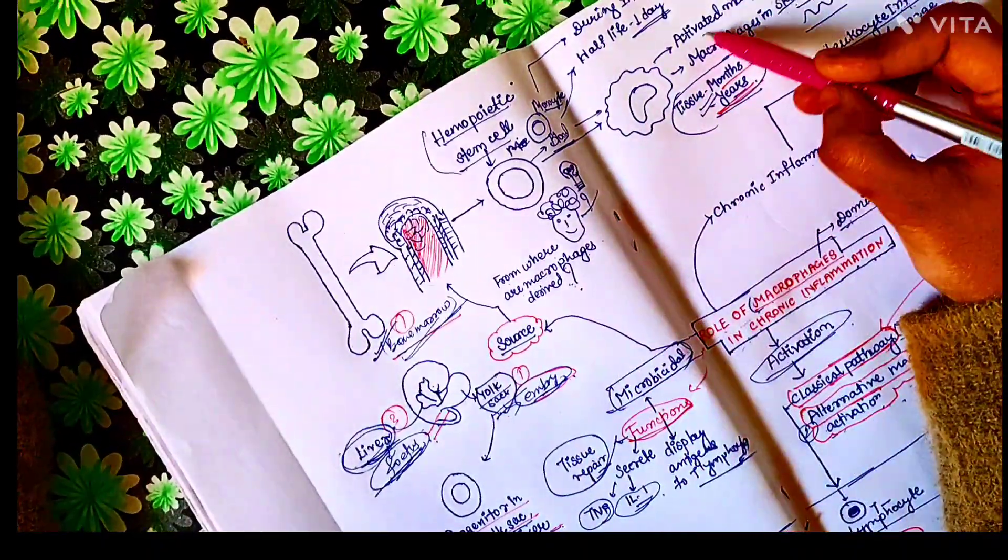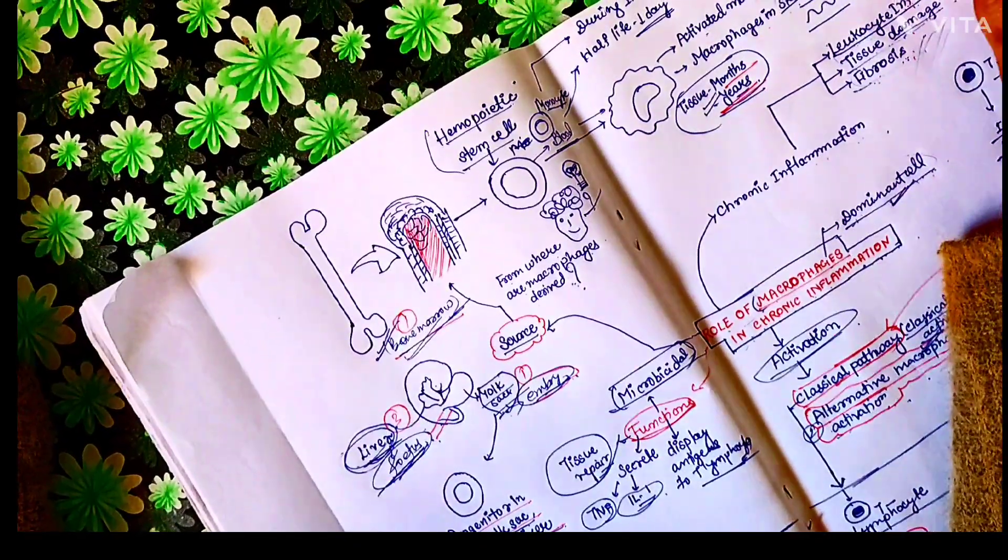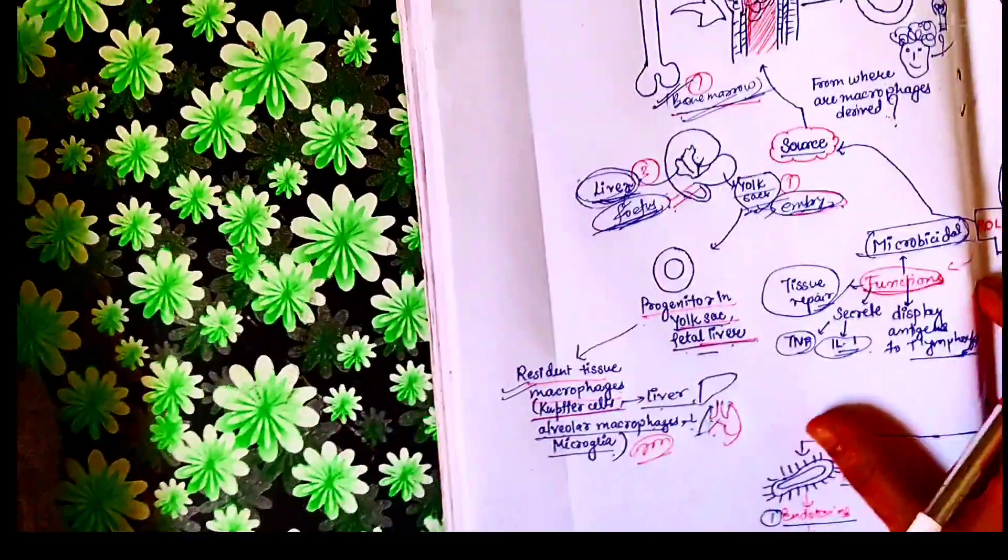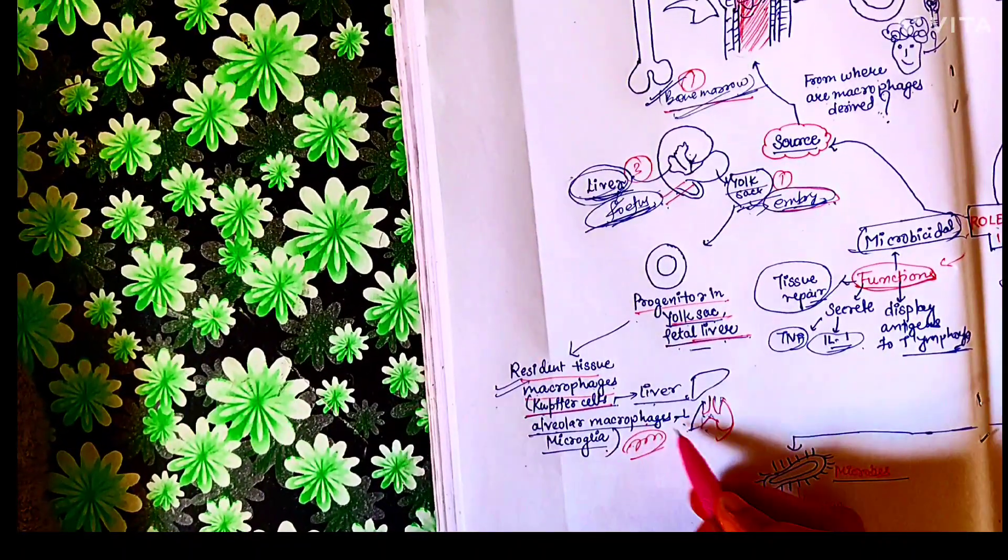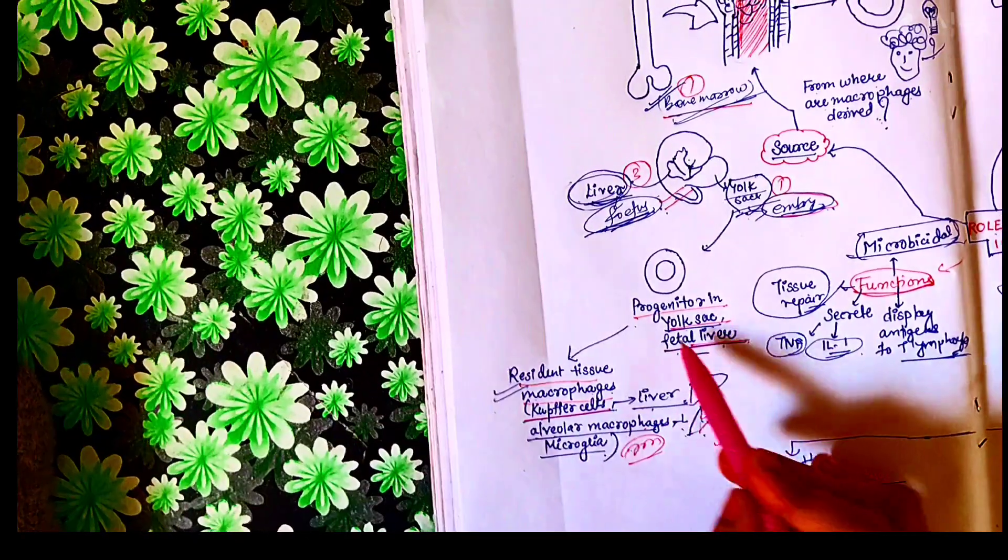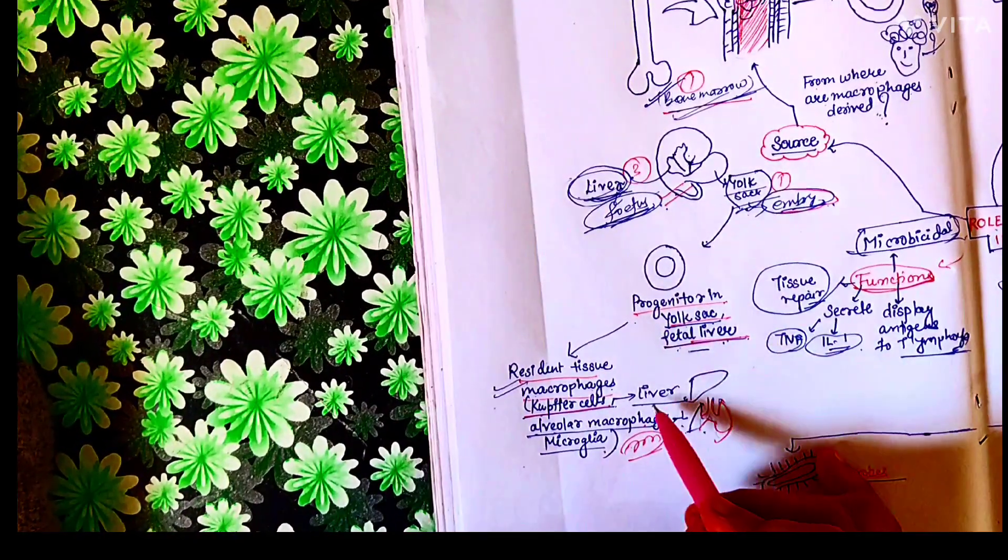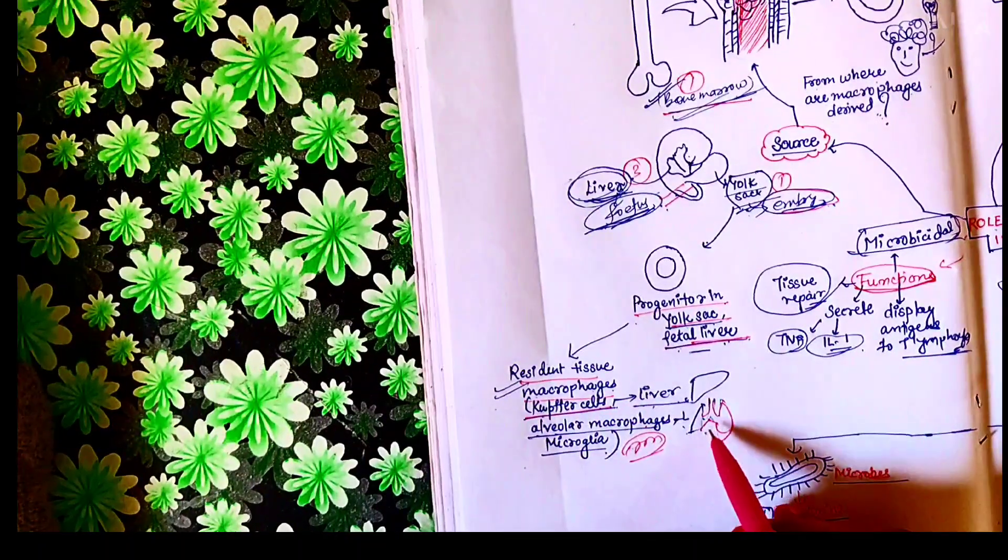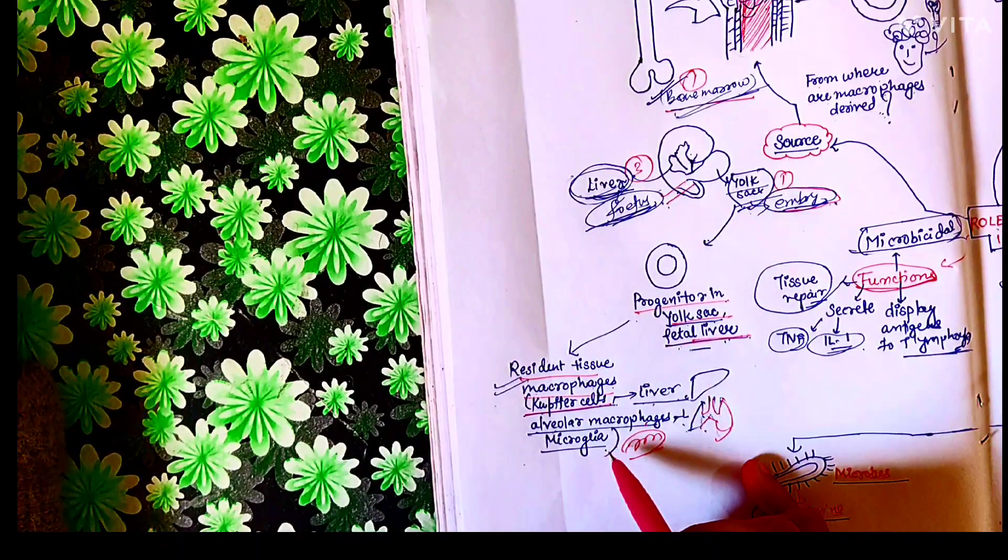So activated macrophages of inflammation of skin and intestinal tract are derived from bone marrow. And there are some resident tissue macrophages which reside in liver, lungs and brain. They are derived from progenitors in yolk sac and fetal liver. So the macrophages of liver are called Kupffer cells, of lung are called alveolar macrophages and of brain are called microglia.